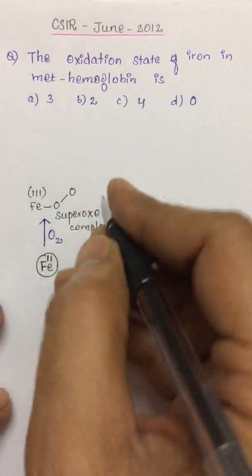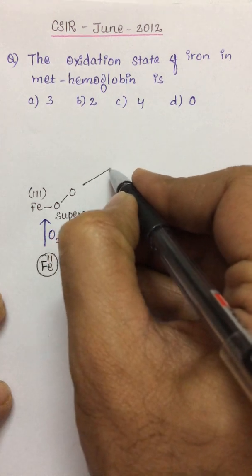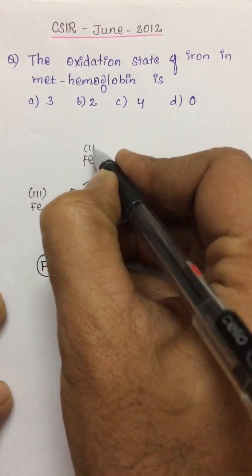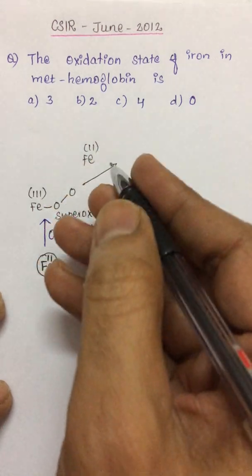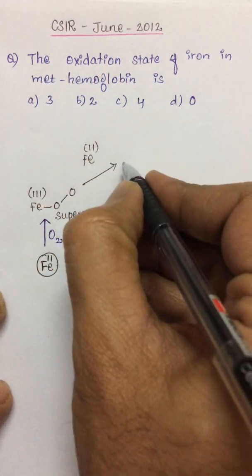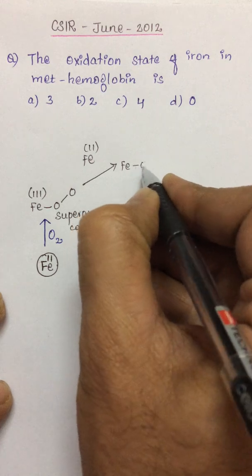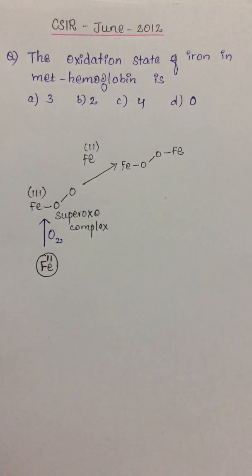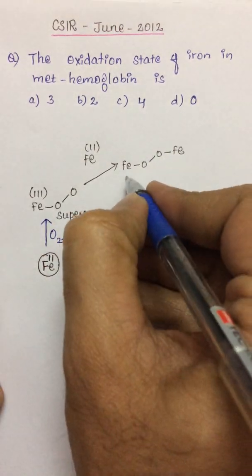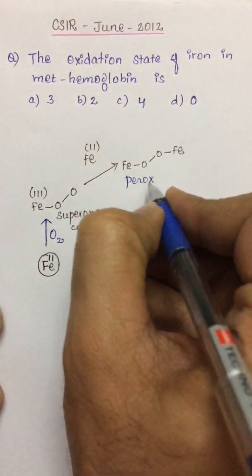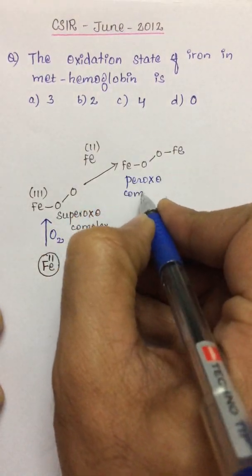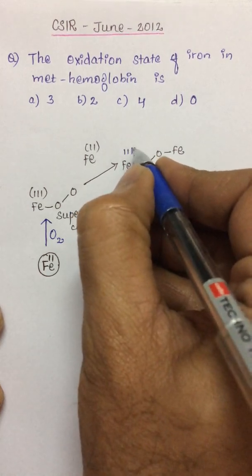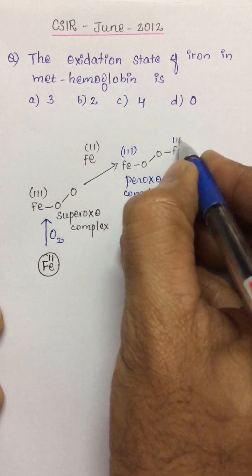Such a superoxo complex will react with iron of another subunit. So once it is reacting with iron of another subunit, a complex is formed. We call this a peroxo complex.